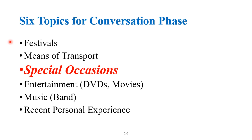These are prescribed topics from which two topics will be chosen by the examiner, and the examiner will ask you questions about two of them. So altogether in the B1 test, you are going to discuss three topics: one your personal topic and two from these conversation phase topics. Because you don't know which two topics are going to come, you need to prepare all of them. So our today's topic is special occasions.